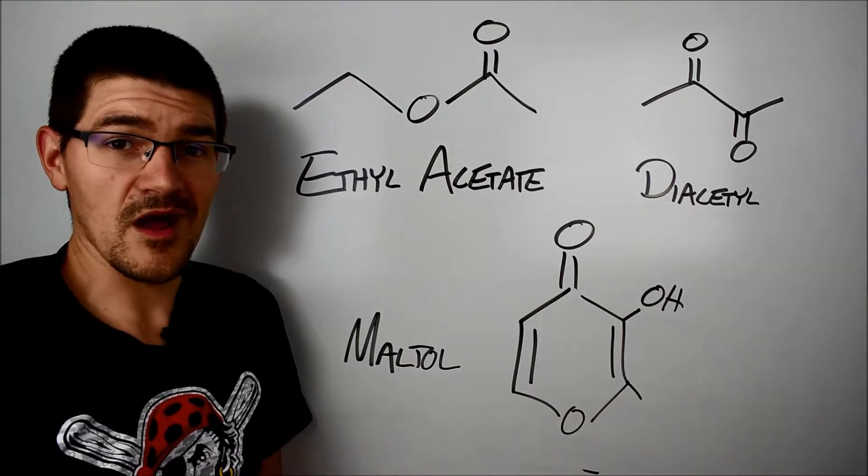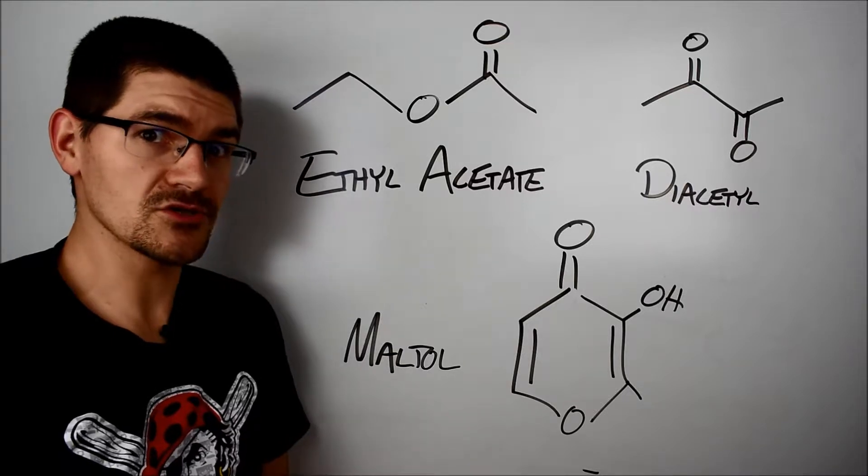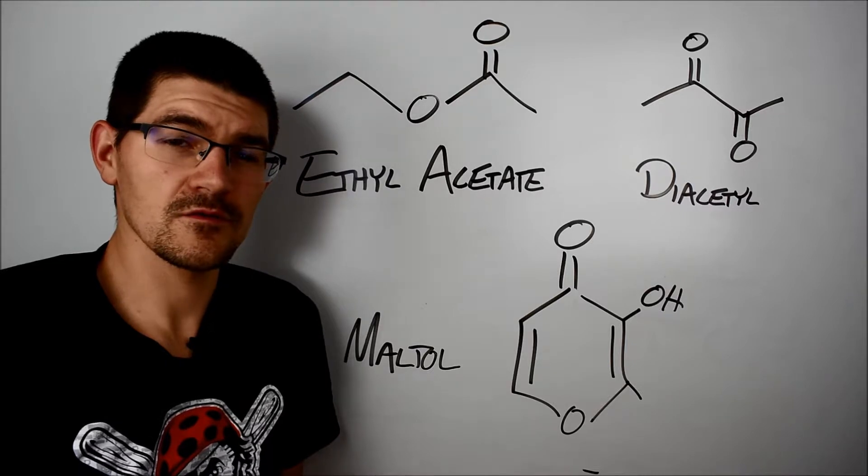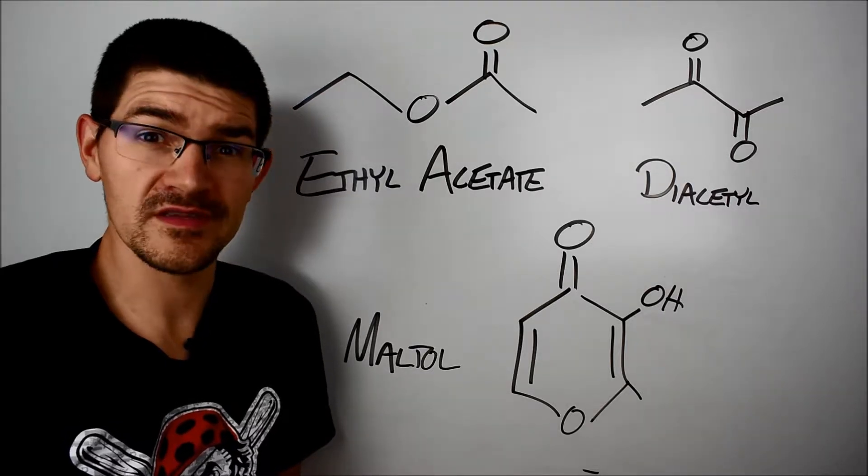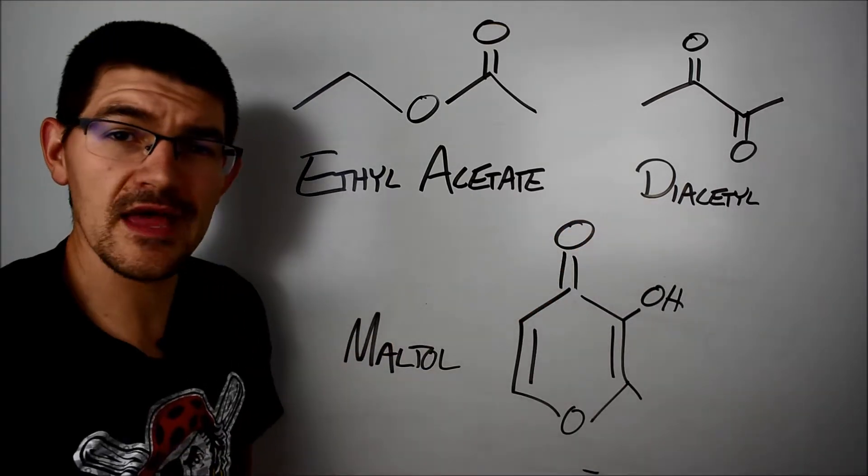Okie dokie, those are the big molecules where we take sucrose, glucose and fructose, put them together and make larger stuff. Here we're going to talk generally about the decomposition products where we take our molecules and have basically fewer than six carbons. The three I want to talk about are ethyl acetate, diacetyl and maltol.